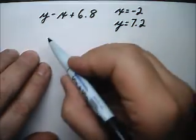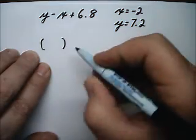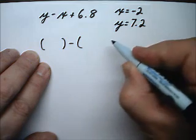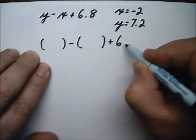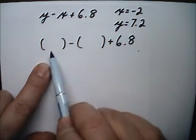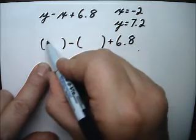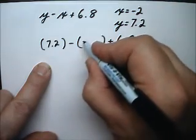The first step is to set it up for substitution with empty parentheses for the variables. I've left empty parentheses for the x and the y. This is the y and this is the x. The y is 7.2 and the x is negative 2.